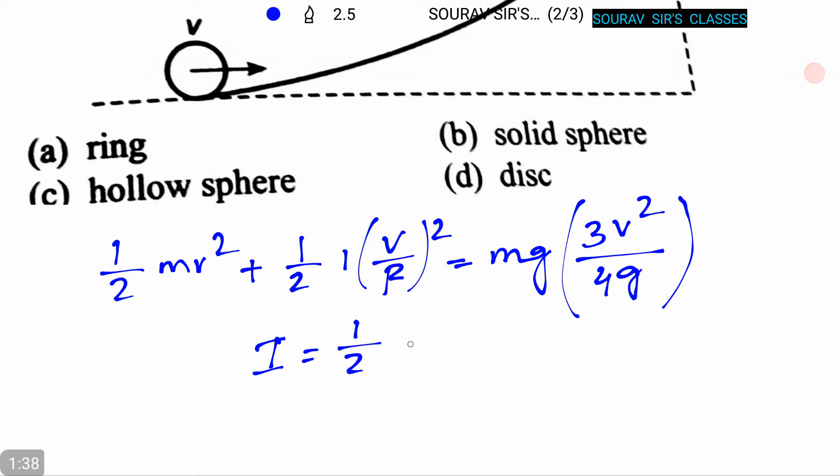(1/2)mr². From this we can get the answer that the body is a disk. So option D is the correct answer.